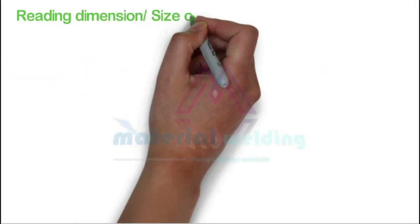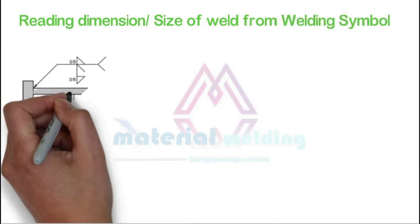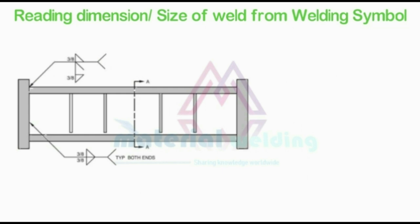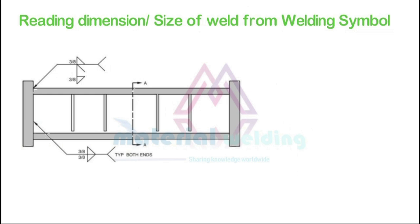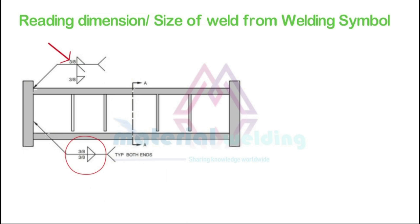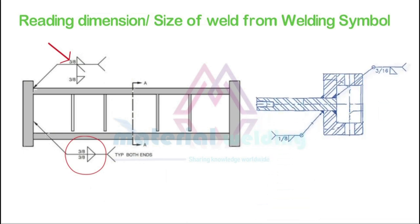Let us learn how to read the welding size from a given welding symbol. First, let us see for fillet weld. As we learned earlier, weld sizes are always given on the left-hand side of the weld symbol. Here, 3/8 inch is the size of the fillet weld in the first picture, and in the second picture the weld size is 1/8 inch. When the size is given in this type of dimension, it is usually in inches, but we must check the unit of dimension given in the fabrication drawing.